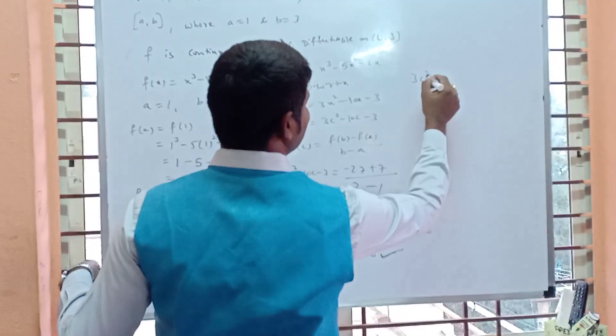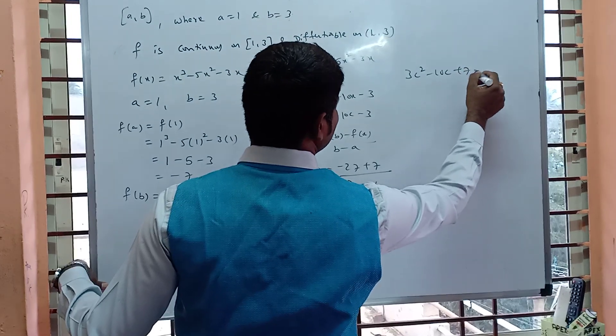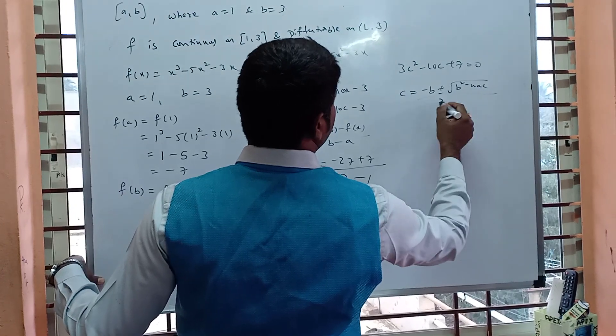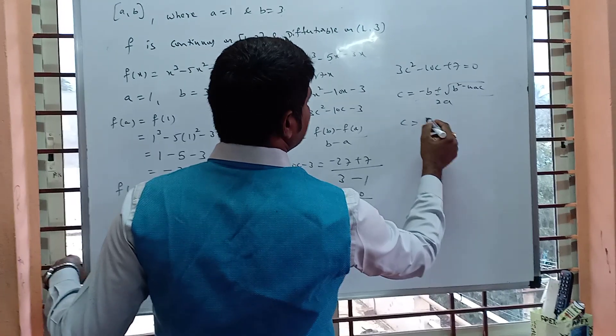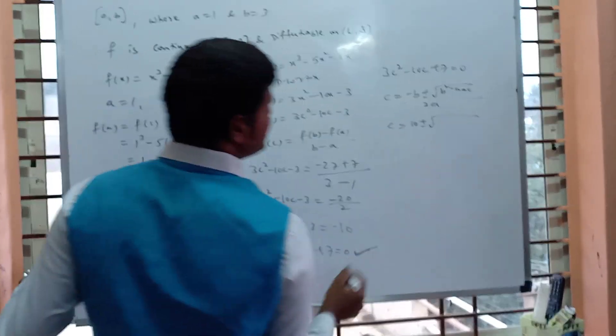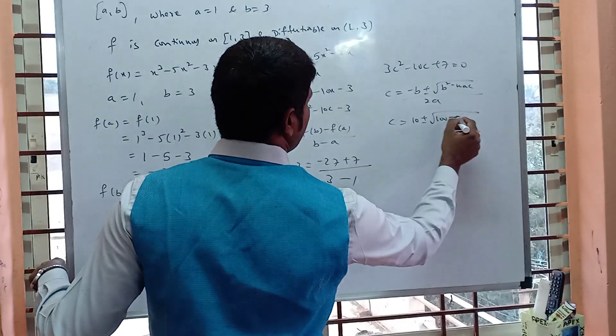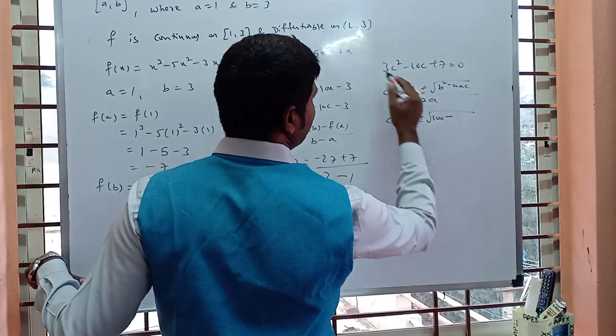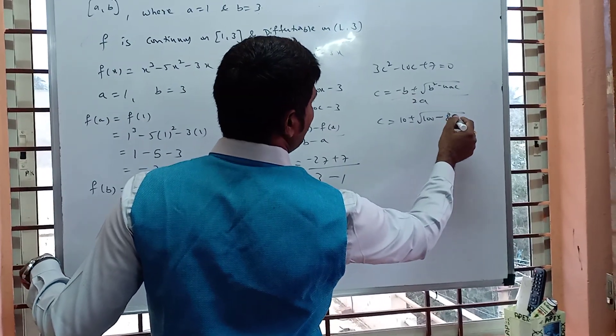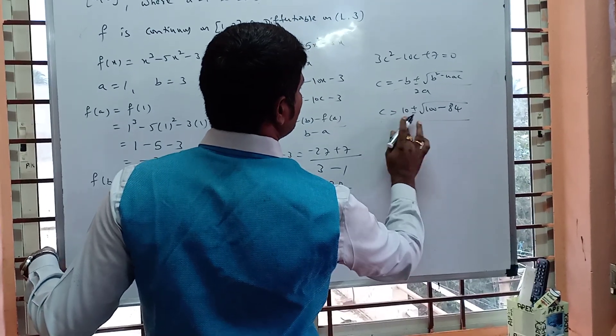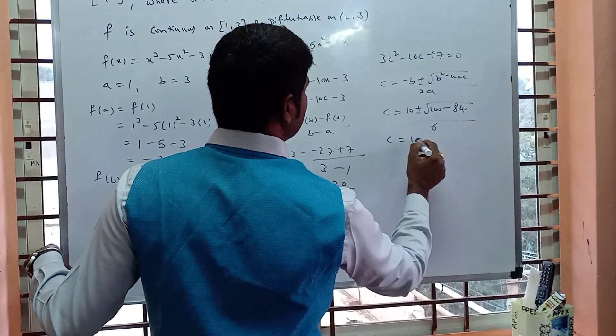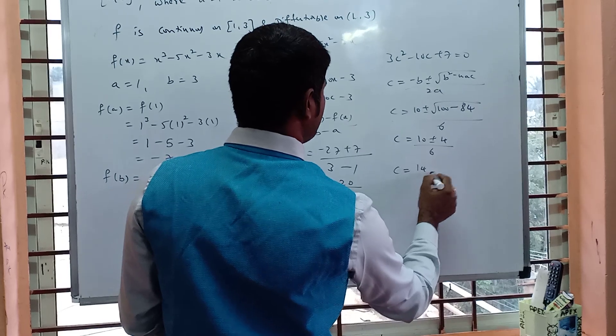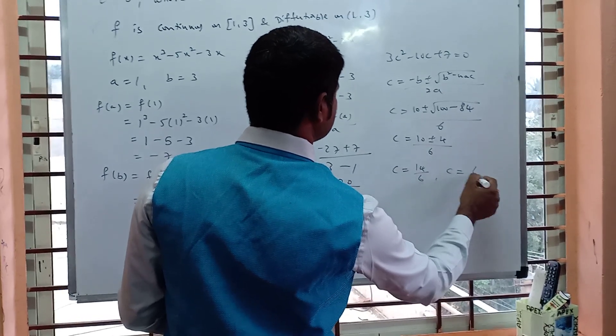Using the quadratic formula: c = [-b ± √(b² - 4ac)]/2a. Substituting values: [10 ± √(100 - 84)]/6 = [10 ± √16]/6 = [10 ± 4]/6. This gives c = 14/6 or c = 6/6.